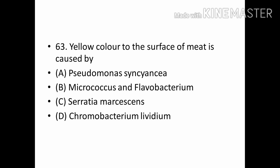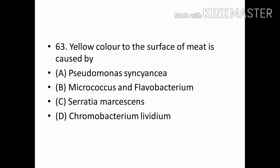Yellow color to the surface of meat is caused by: Options — Pseudomonas Insinia, Micrococcus and Flavobacterium, Serratia marcescens, Chromobacterium lividum. Correct answer: Option B — Micrococcus and Flavobacterium.